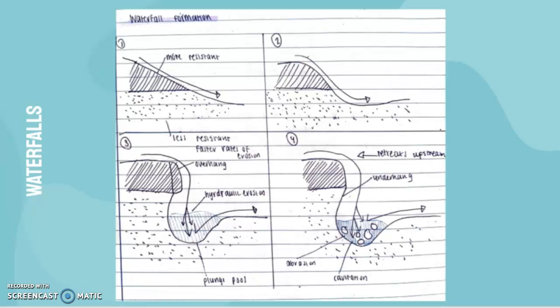Let's go step by step. You have here a cliff-like rock with more resistant rock on top, followed by less resistant rock underneath. The water is flowing like this.